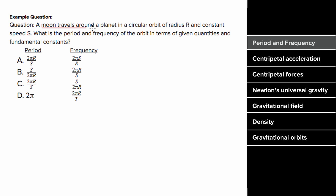So what's an example involving period and frequency look like? Let's say a moon travels around a planet in a circular orbit of radius r at a constant speed s, and we want to know what the period and frequency are in terms of given quantities and fundamental constants. We'll use the relationship between the speed, the period, and the frequency. We know that for objects in circular motion, the speed is two pi r over the period.